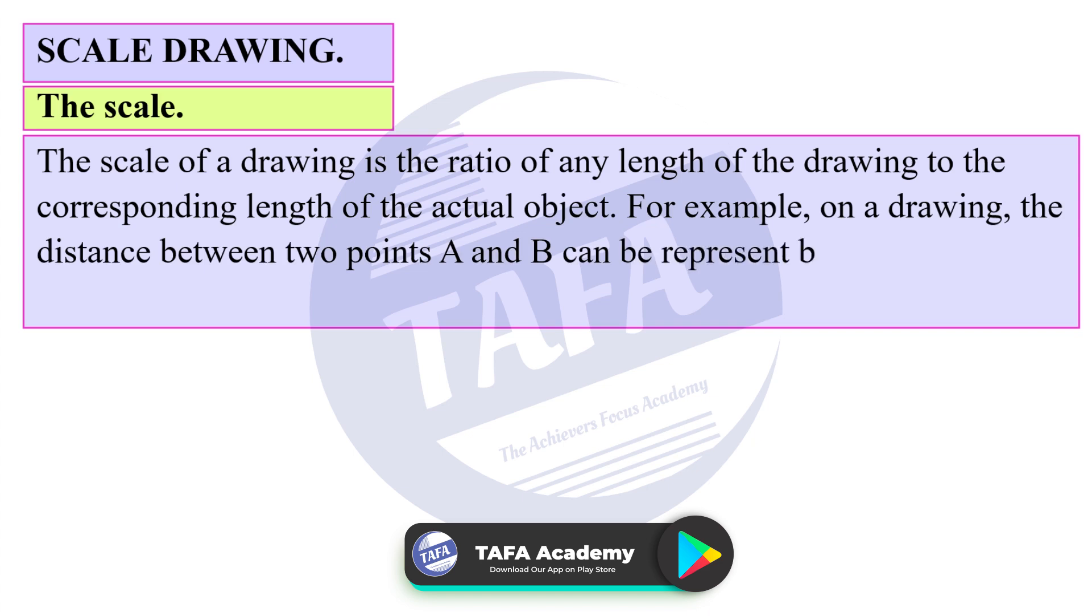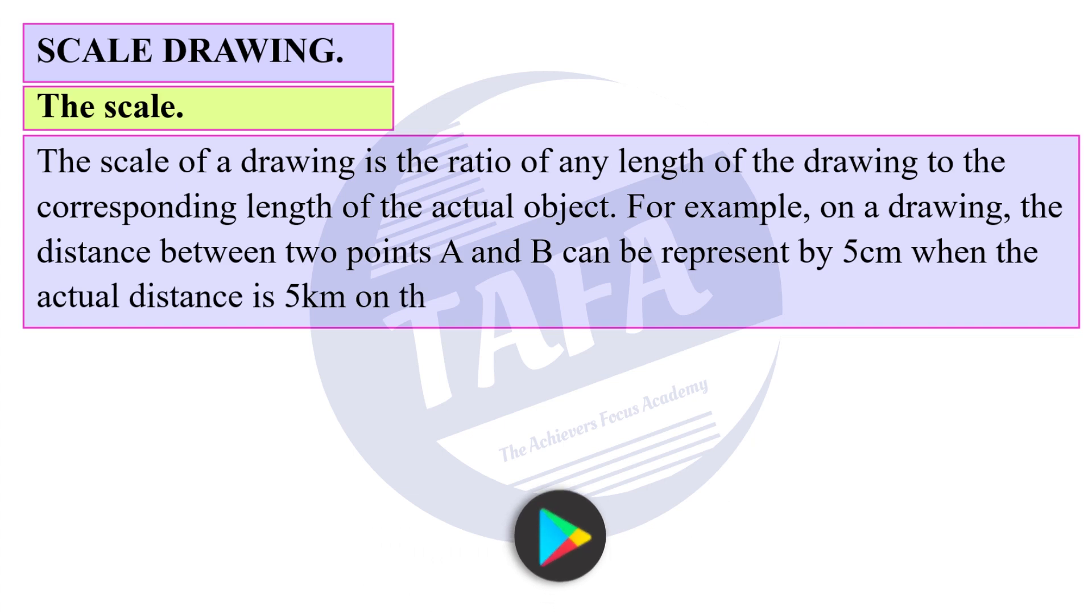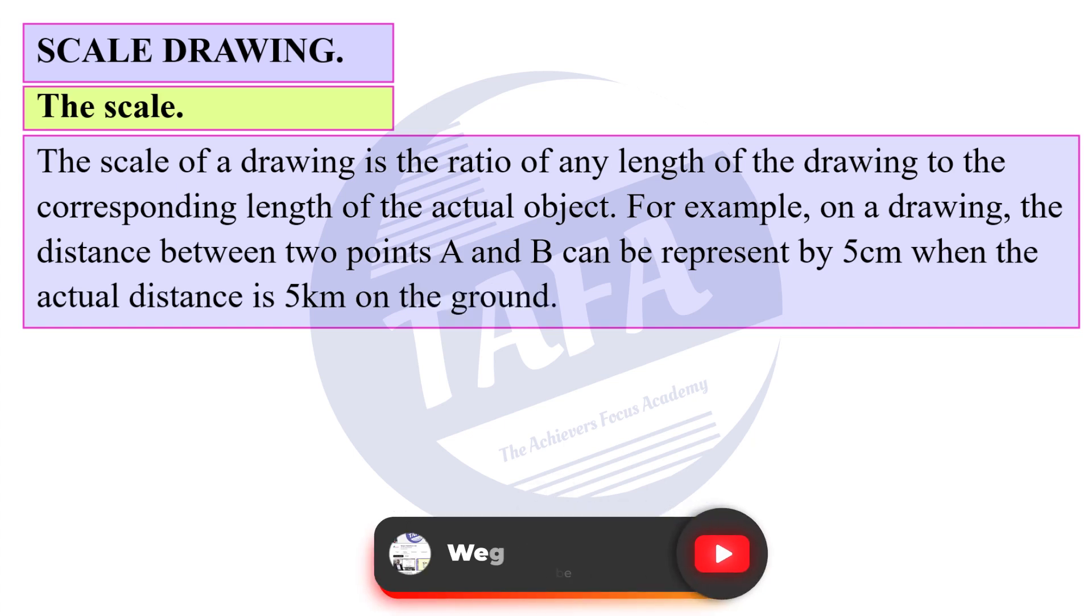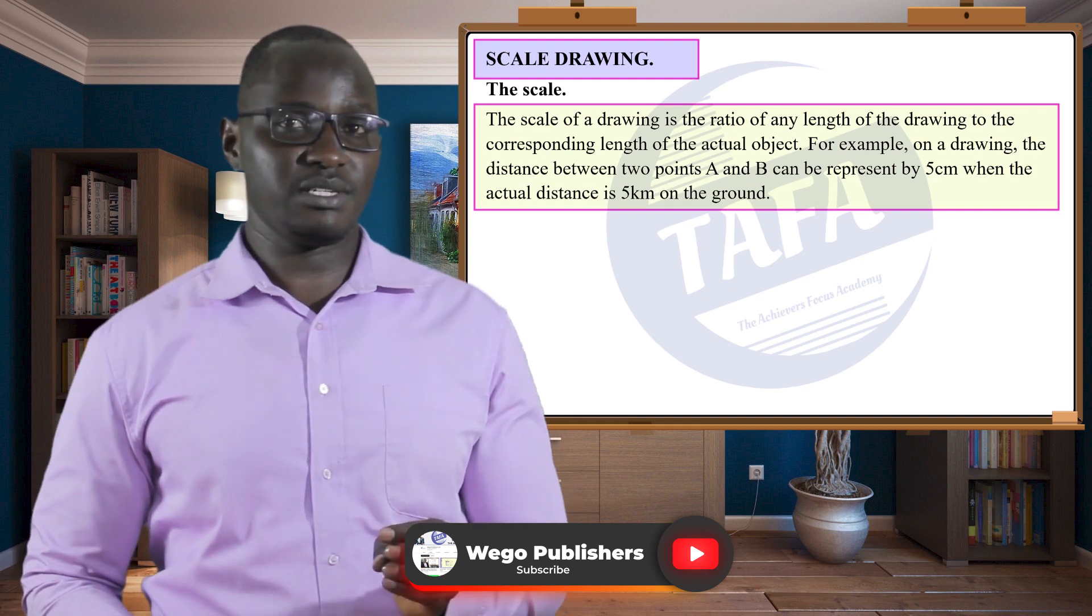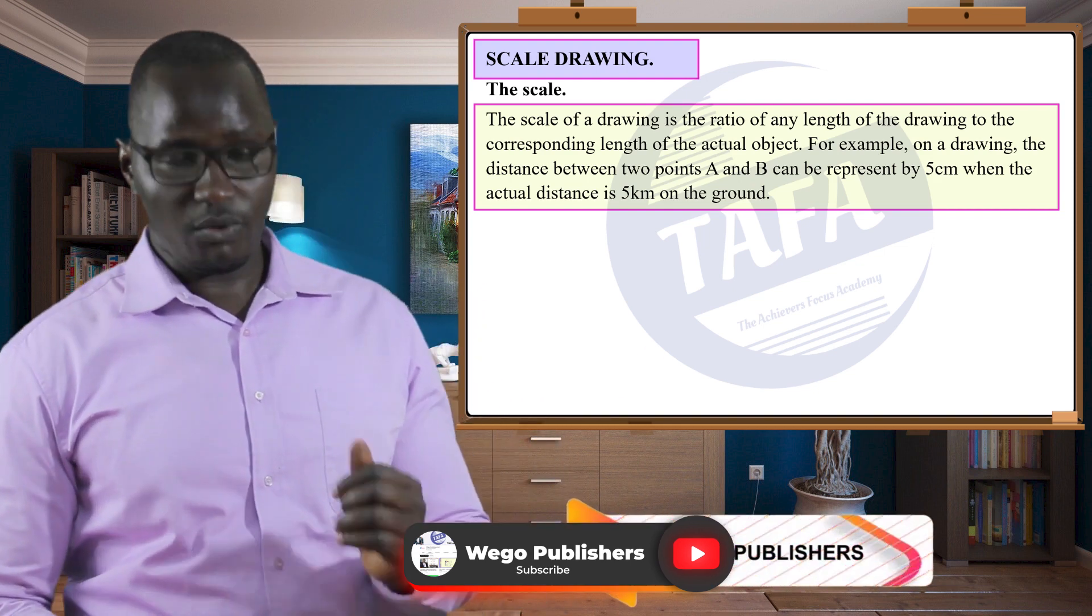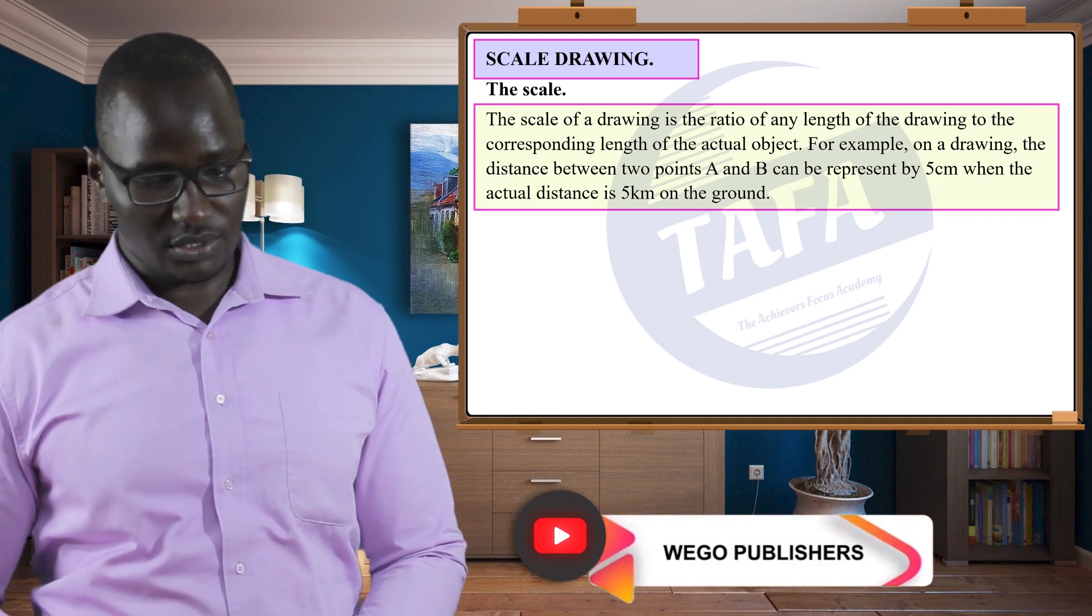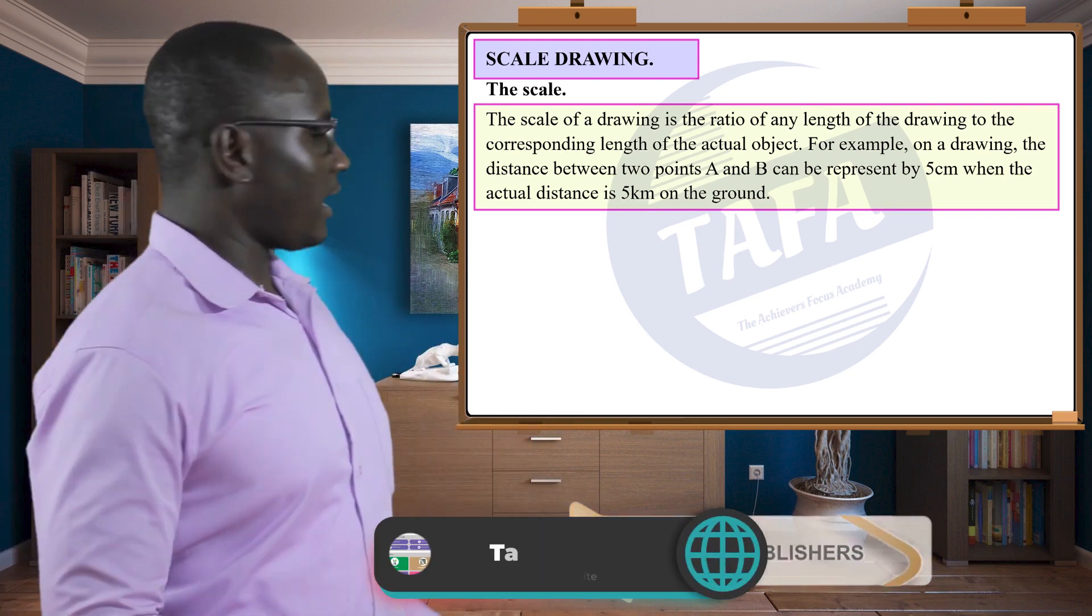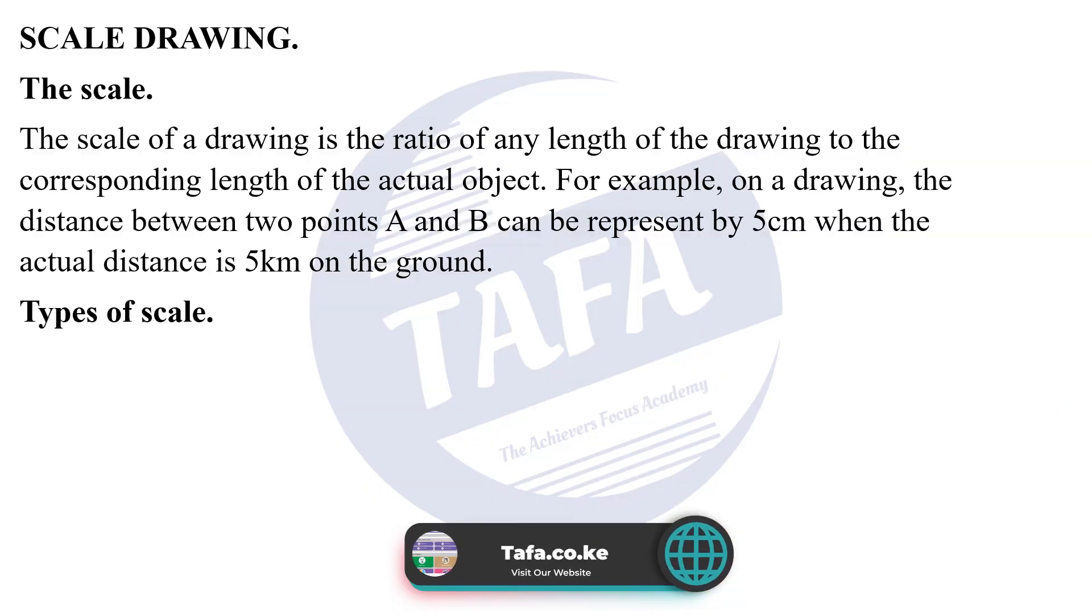When the actual distance is five kilometers on the ground, that means the scale we've used is one centimeter representing one kilometer on the ground. Now we have three types of scale. A scale can be expressed in three different ways.